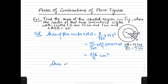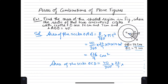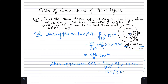Area of sector OCD: theta is 40 degrees, so 40/360 × 22/7, and in this case R equals 7. So: 7 × 7 × 7 cm² = 154/9 cm². This is equation number 1 and this is equation number 2.